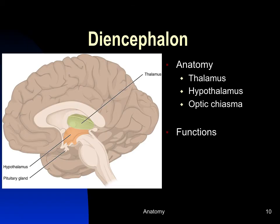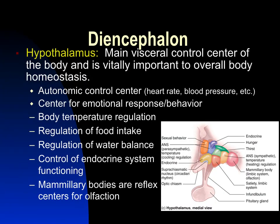Beneath the cerebral cortex is the diencephalon, which can only be seen in cutaway views. It includes the thalamus, hypothalamus, and optic nerve crossing below the hypothalamus. The epithalamus is also known as the pineal gland. The diencephalon is extremely important for homeostasis but is not part of the conscious brain. The hypothalamus is our main visceral control center, regulating body temperature, heart rate, blood pressure, food and water intake, the endocrine system, and emotional regulation.